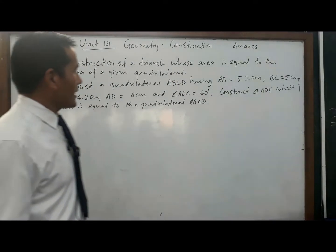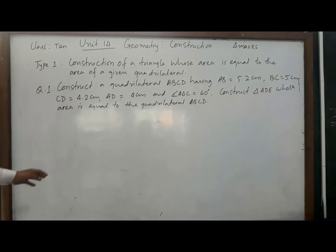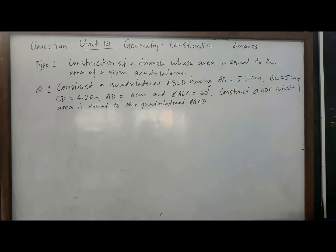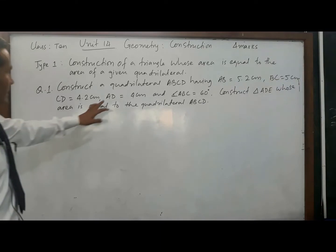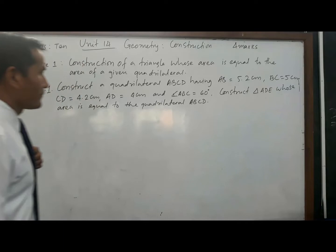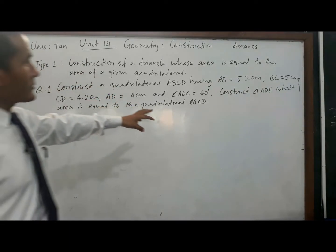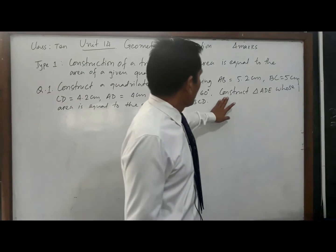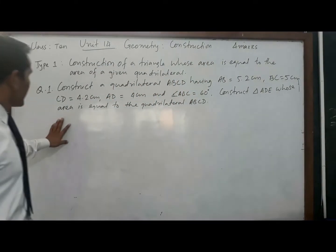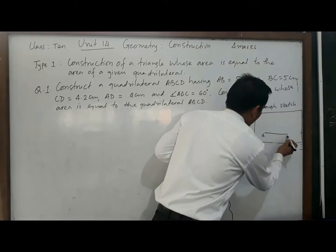Let's go to question number one: Construct a quadrilateral ABCD having AB = 5.2 cm, BC = 5 cm, CD = 4.2 cm, AD = 4 cm, and angle ABC = 60°. After constructing this quadrilateral, we have to construct triangle ADE whose area is equal to the area of quadrilateral ABCD.